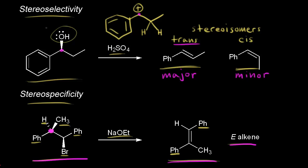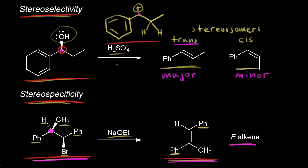Finally, let's directly compare stereoselectivity with stereospecificity. In a stereospecific reaction, the stereochemistry of the substrate determines the stereochemistry of the product — the stereochemical information is preserved because of the mechanism. That's not the case in this stereoselective reaction. If we look at the stereochemistry of the OH at this carbon, the stereochemistry is not preserved in our products — the stereochemical information is lost when we form our carbocation.